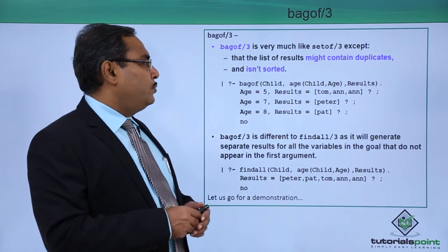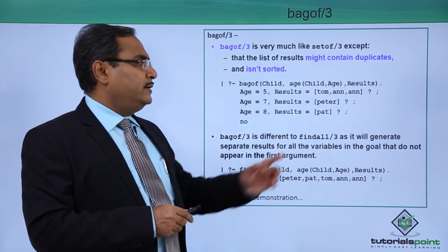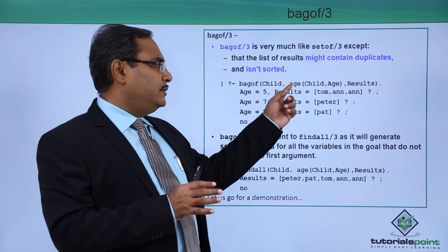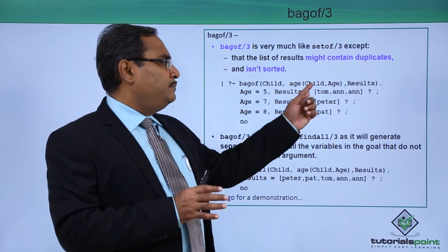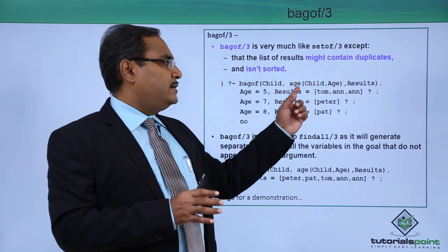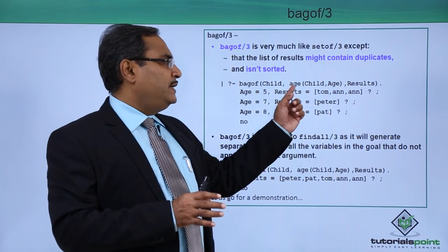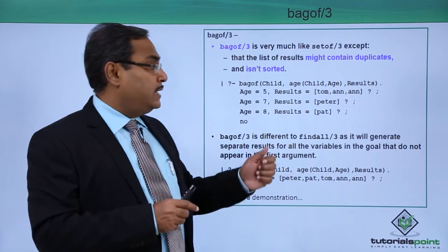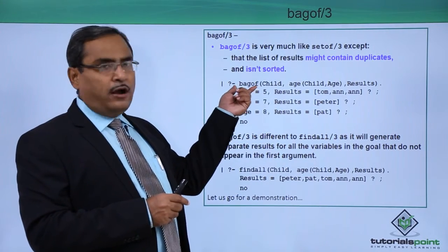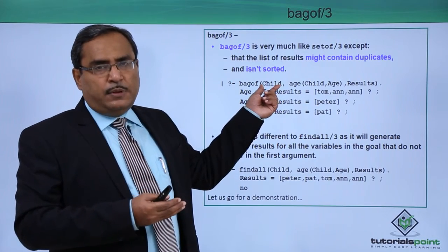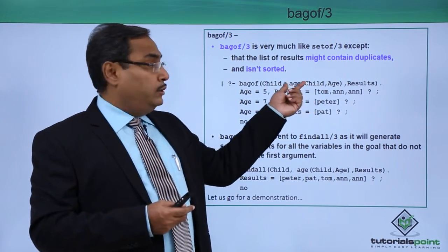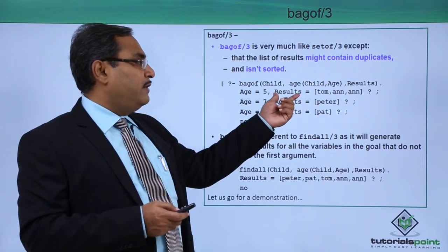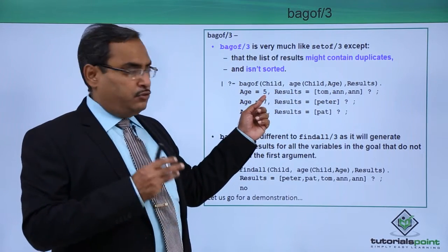Let us go for one sample example. Bagof child, age child, age, results. We are having one knowledge base where it has been written that age Tom 5, age Peter 7, age Pat 8, age Ann 5, age Ann 5. In this way we are having some set of given facts in the knowledge base. And on that knowledge base if we apply this bagof then child, that means we are going to list the name of child on this respective knowledge base and the output set will be labeled as results.